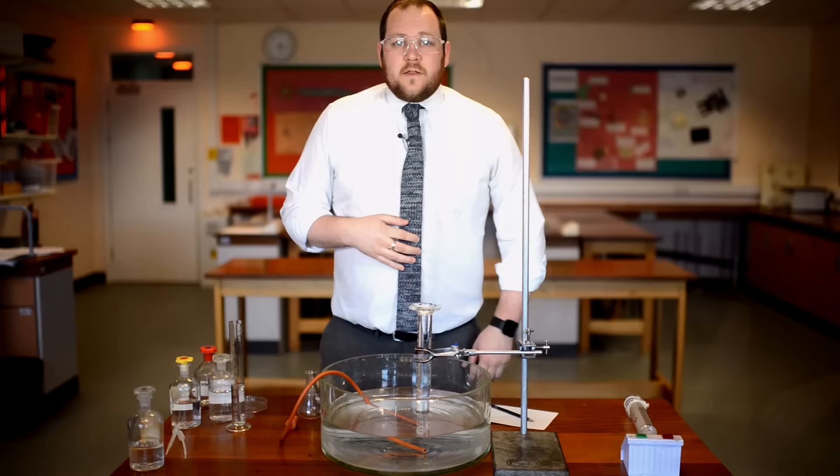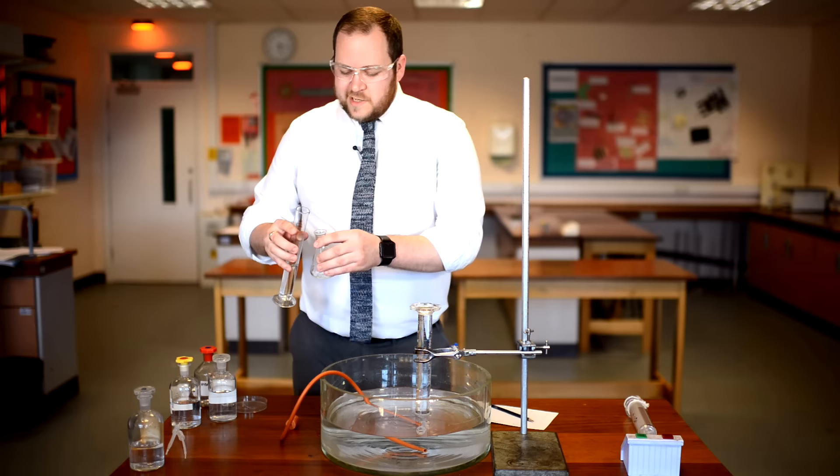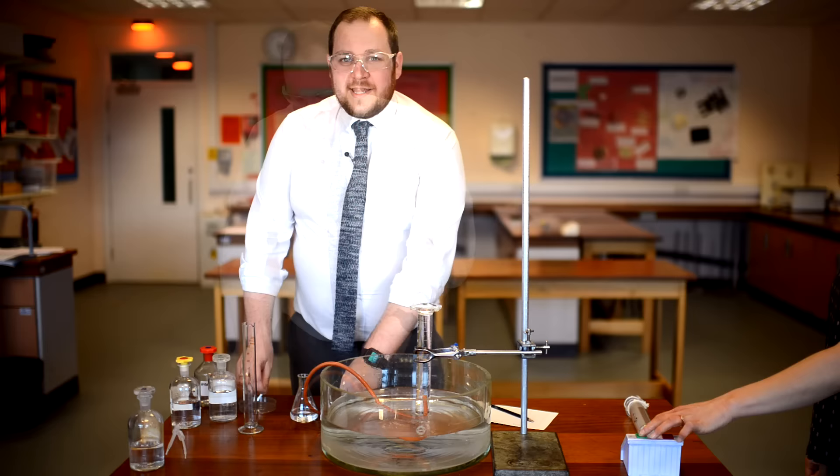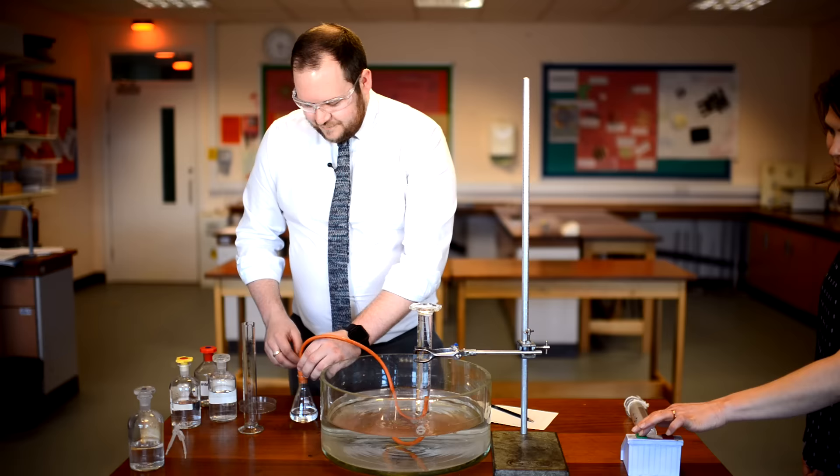This time I'm using the one molar hydrochloric acid to see if the reaction is a little bit slower. I'm going to once again pour the hydrochloric acid into the conical flask. As you add the magnesium, insert the bung and start the timer at the same time. Once again we're measuring the gas produced every 10 seconds.